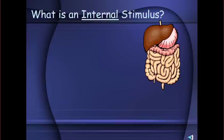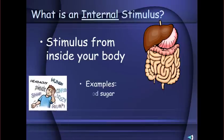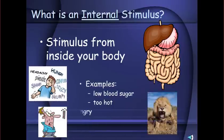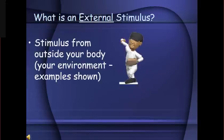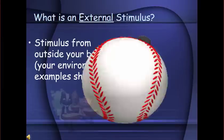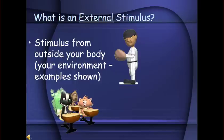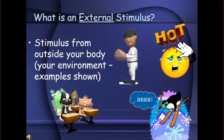An internal stimulus comes from inside your body. Examples of internal stimuli include low blood sugar, being too hot, or being too hungry. An external stimulus is something that comes from outside your body — from the environment around you. Examples of external stimuli include the smell of something around you, the heat on a hot summer day, or cold weather.